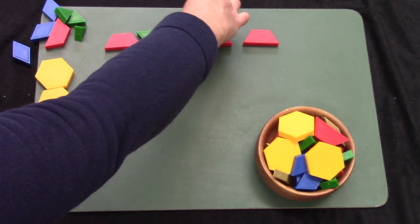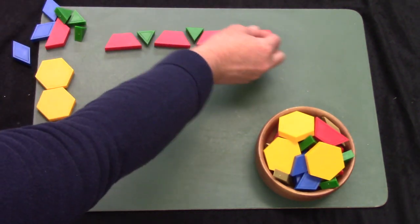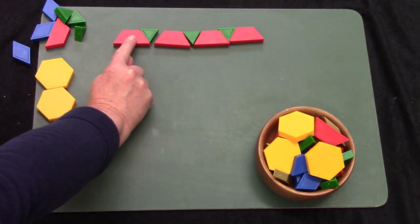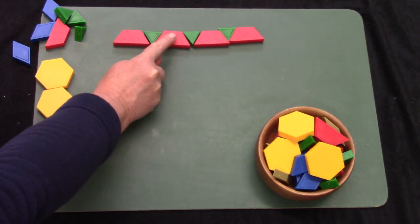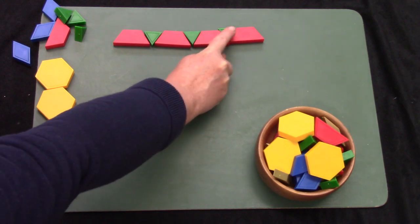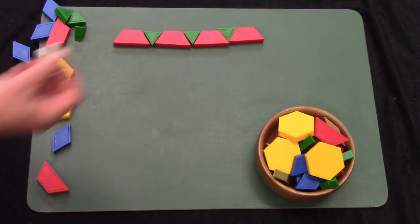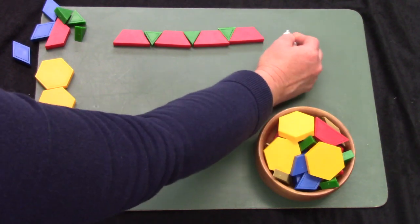When we add another shape into the pattern, it's called an A-B pattern because it is trapezoid, triangle, trapezoid, triangle, trapezoid, triangle, trapezoid. That is called an A-B pattern.